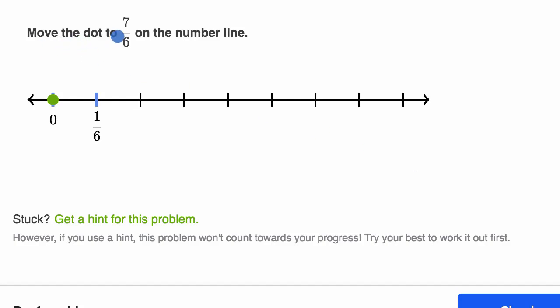We're asked to move the dot to 7 sixths on the number line. So pause this video. I can move this dot right over here, but I encourage you to pause the video and put your finger on where 7 sixths would be on the number line. All right, now let's work on this together.